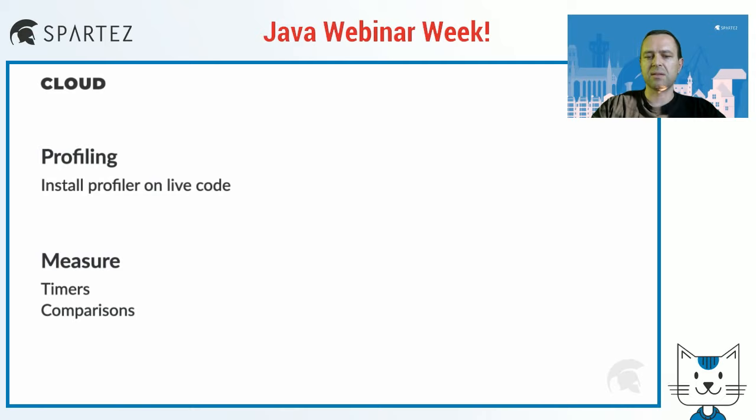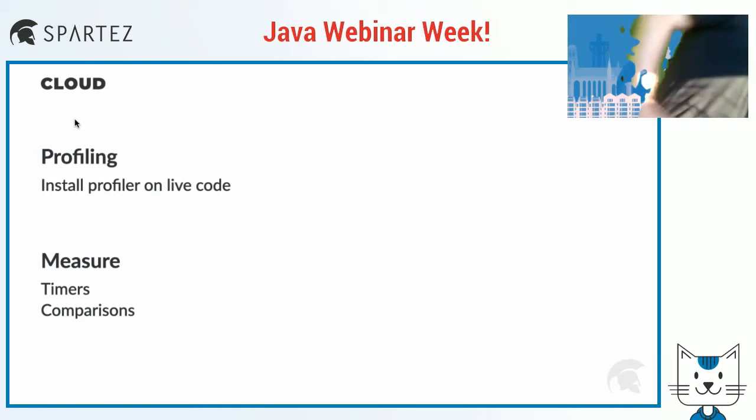Measuring stuff is also much easier in cloud. If you want to add new analytics, you simply add them in the code, and then in a matter of hours they are live. Evaluating performance is also much more accurate in cloud — we can enable improvements, for example, for 10% of people and compare performance versus the rest, so we can easily tell whether the improvement works.